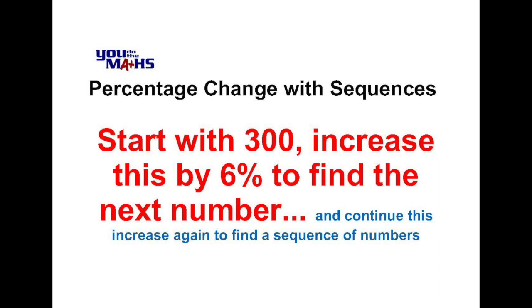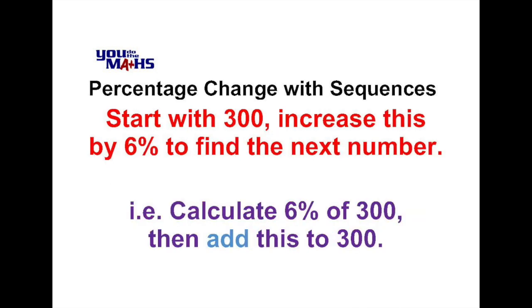In this video we're going to look at how sequences can be used to calculate percentage increase or decrease over a period of time for some particular amount. We've got a value of 300 and we're increasing it by 6%. If we wanted to work out the value after one increase, it would be a simple case of working out 6% of 300 and then adding it on to 300. But if we're going to be doing this over a long period of time — perhaps it represents a population of a species or the value of some object — it might be easier to do a repetitive calculation.